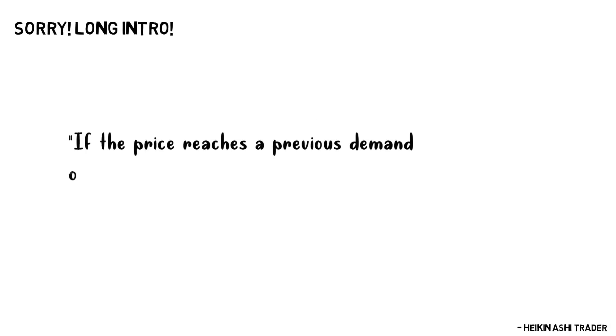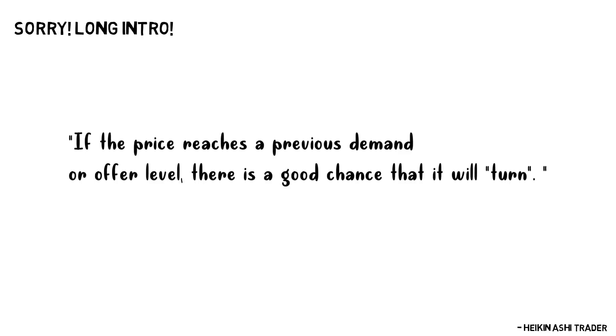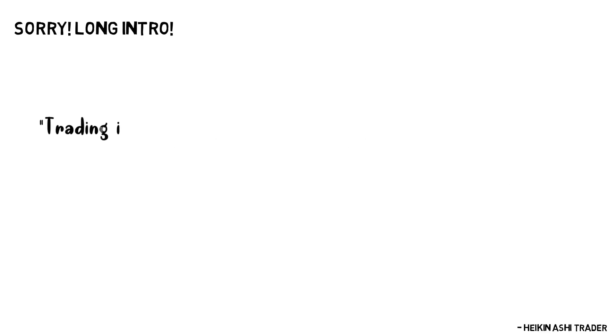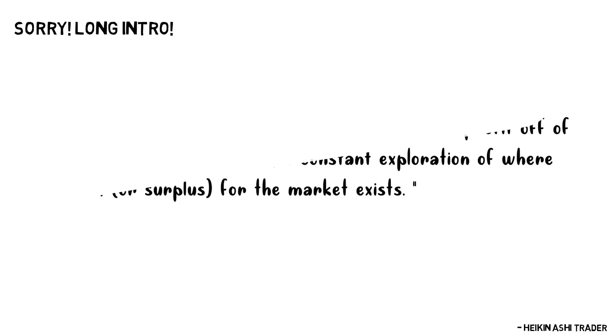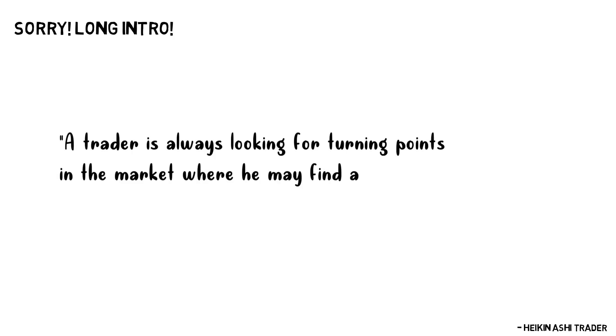Anyway, let's start — the intro was a little too long. At the beginning of his writing, the author states: 'If the price reaches a previous demand or offer level, there's a good chance it will turn. Trading is nothing more than the ability to make profit off the imbalance of a market — a constant exploration of where demand or surplus for the market exists. A trader is always looking for a turning point where he may find an imbalance to exploit.' The meaning I interpret is: trade on supply and demand levels where a possible bounce occurs, also known as counter-trend trading. You will see lots of examples given in his rules.